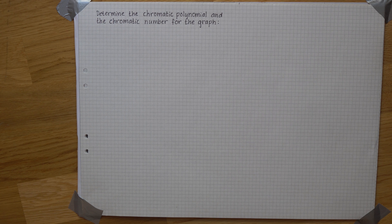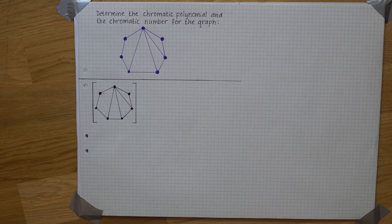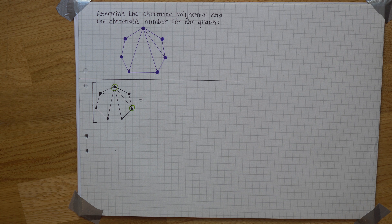We're interested in the chromatic polynomial and the chromatic number for this graph. We'll start by breaking off a triangle in these two points.